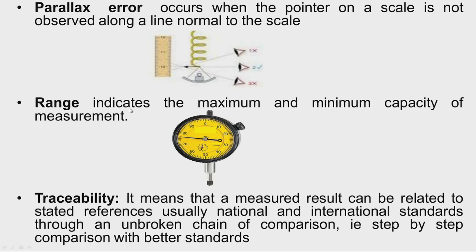The range of an instrument indicates its maximum and minimum capacity — the difference gives the range. For a dial indicator, one complete revolution of the pointer corresponds to a displacement of one millimeter. With 10 graduations in the small dial, the range of this instrument is 10 millimeters.